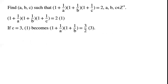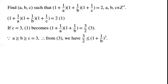If c = 3, equation 1 becomes (1 + 1/a)(1 + 1/b) = 3/2. Because a ≥ b ≥ c = 3, from equation 3, we have 3/2 ≤ (1 + 1/b)².